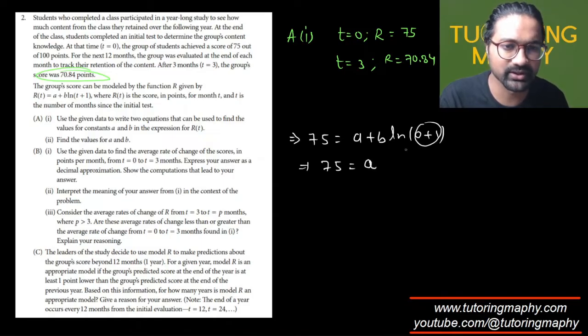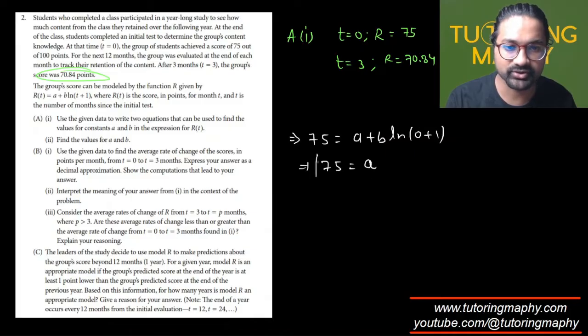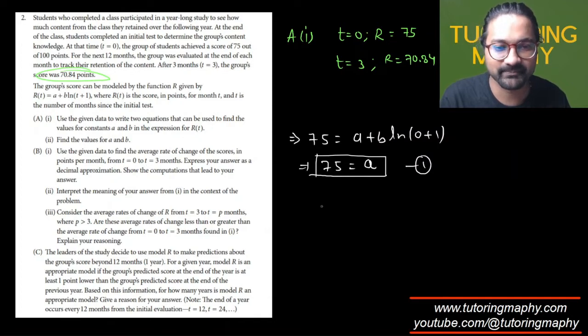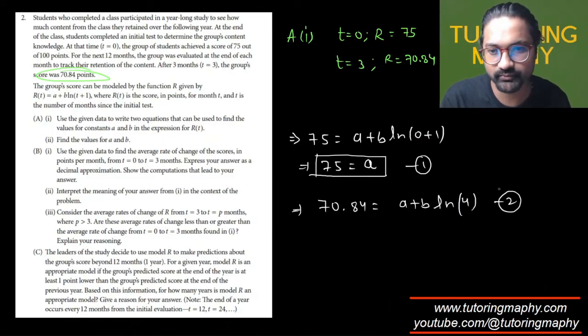The time is replaced with 0 and r is replaced with 75. So this is going to look like 75 is equal to a. Why? Because 0 plus 1 is 1 and ln of 1, natural log of 1, in fact any log of 1 is just 0. So we got the value of a as well, that's equation number 1. And equation number 2 is 70.84 is equal to a plus b times natural log of 4. That's equation number 2.